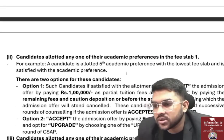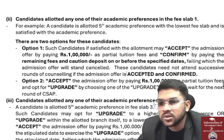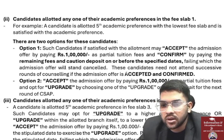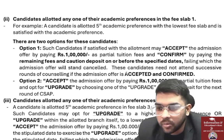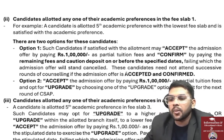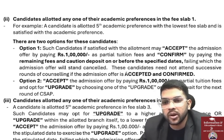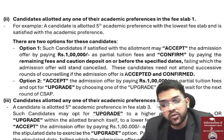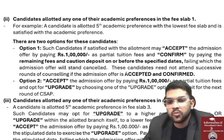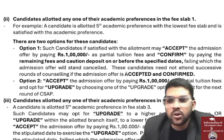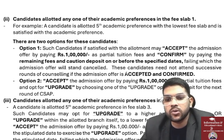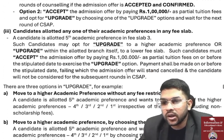If a candidate is allotted one of their academic preferences in any fee slab, there are two options. Option 1: Accept and Confirm — if satisfied with the allotment, pay ₹1 lakh to confirm the seat. Option 2: Accept and Upgrade — if you want a better branch or lower fee slab, you can opt for upgradation. The best option for you depends on your rank, expectations, and goals — that is what I will guide you on once you register.